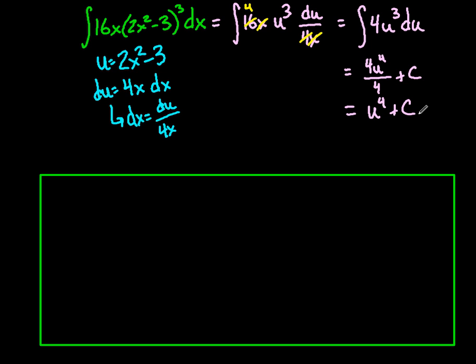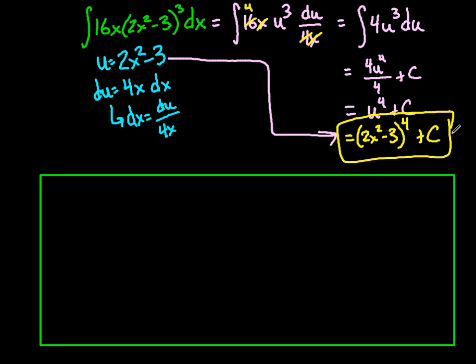So, now, the only issue is, though, we started in terms of x and we got an answer in terms of u. I don't like that. So, all I'm going to do is I'm going to take that u value and just plug it right back in. And my final answer will be, when I plug back in, 2x squared minus 3, the quantity to the fourth power, plus c. That's my final answer.